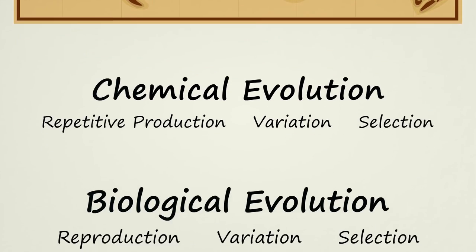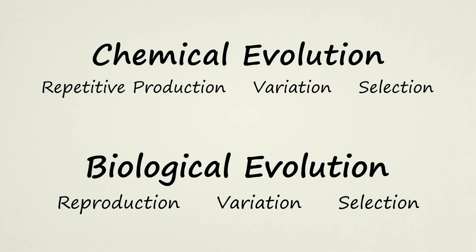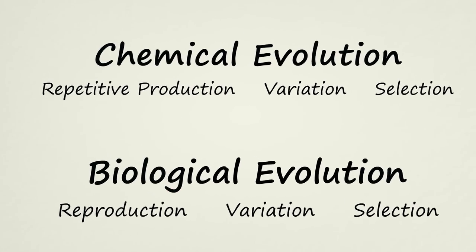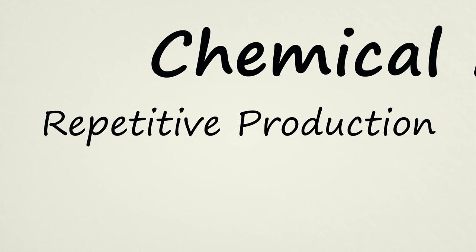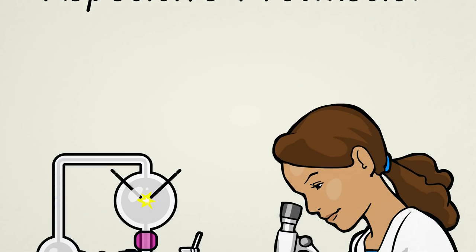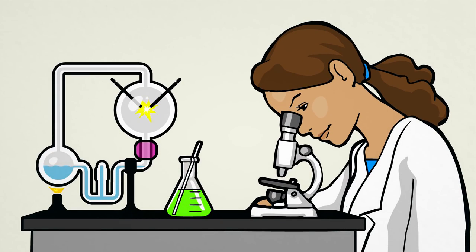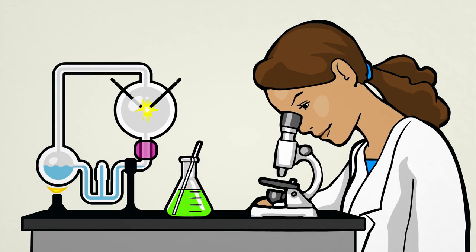So, to sum things up, the main difference between chemical evolution and biological evolution is that chemical evolution can produce new characteristics and abilities without depending on reproduction. Because of this, chemical evolution is being investigated as a possible cause for the origin of life.